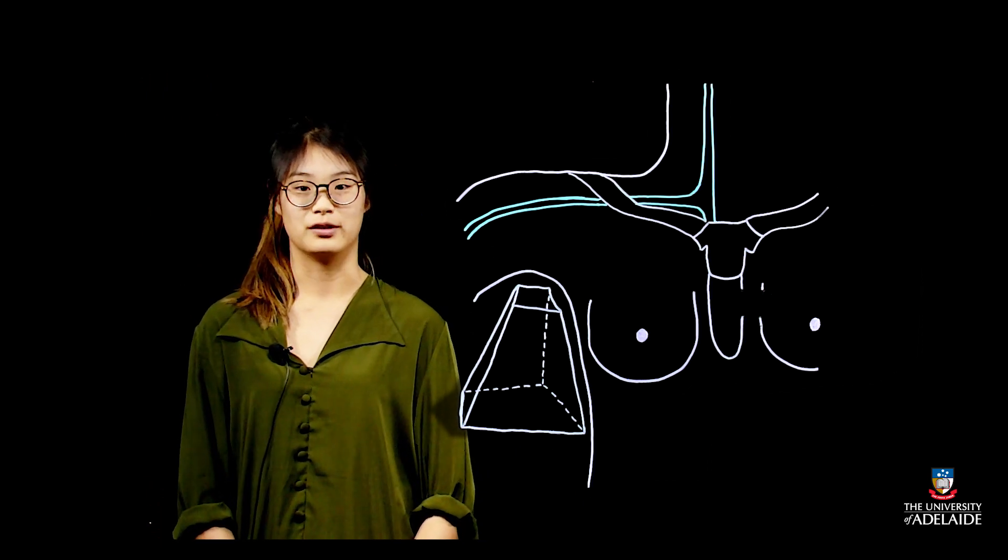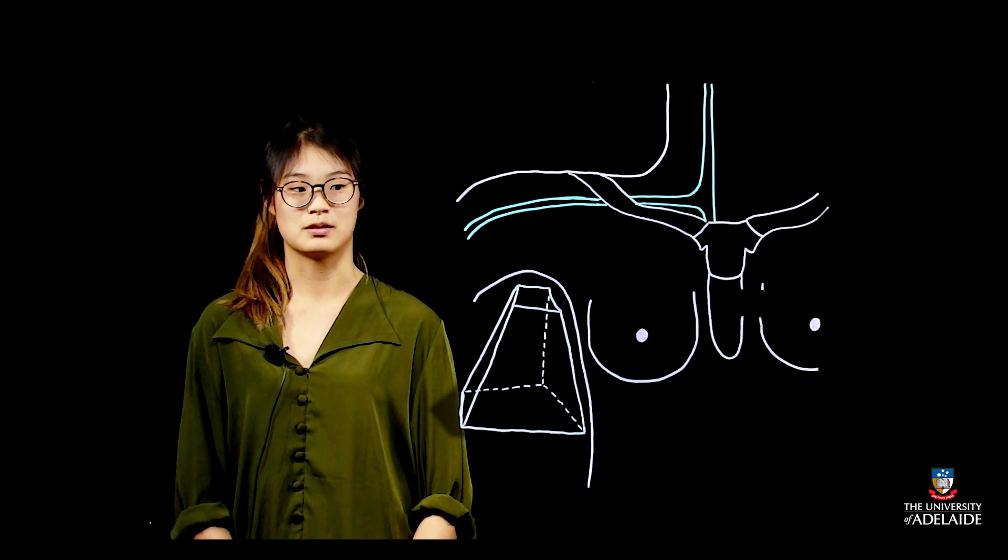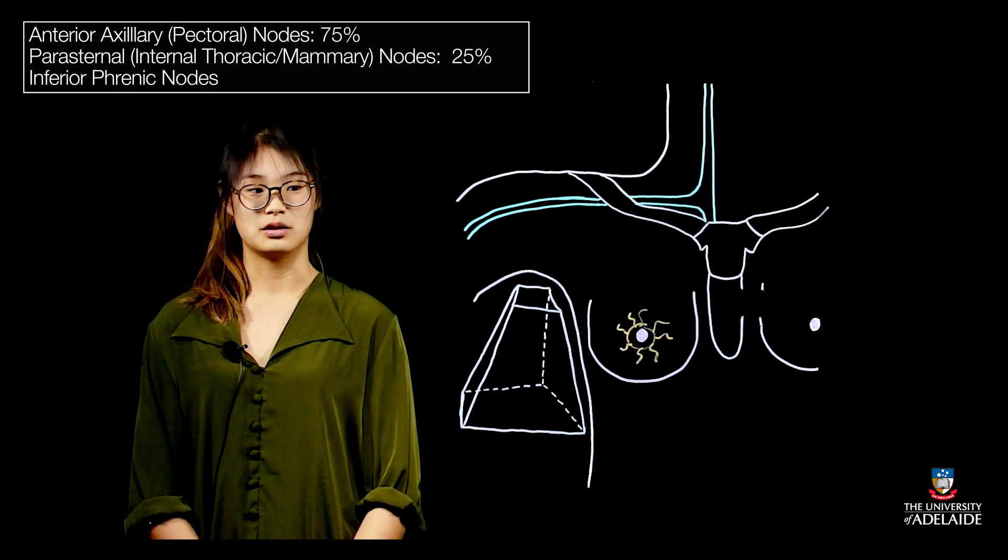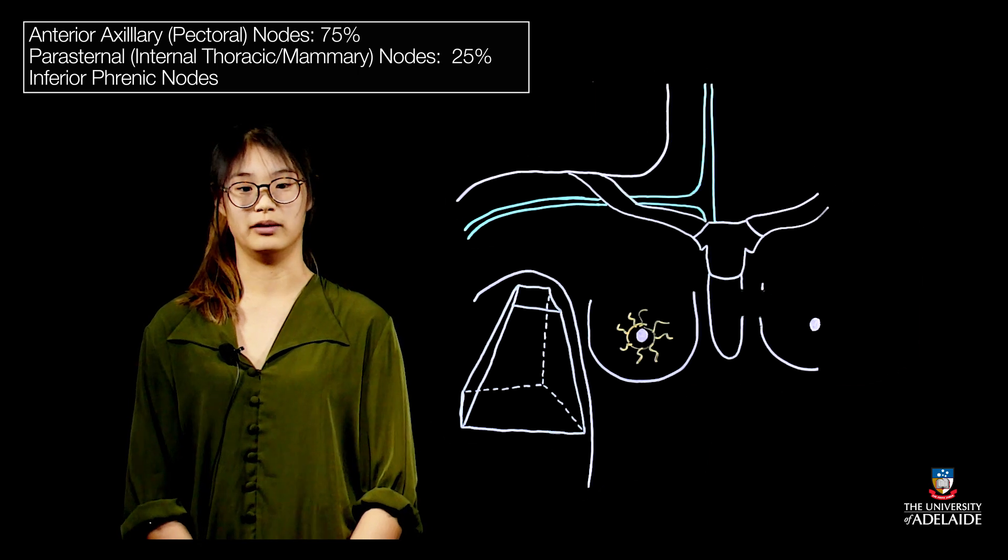Small lymphatic vessels within the breast converge on the subareolar plexus surrounding the nipple. From here there are two main routes for lymphatic drainage. 75% of the lymph will go to the axillary lymph nodes.